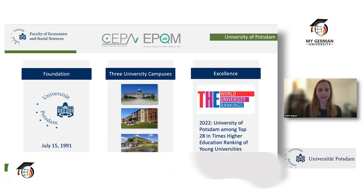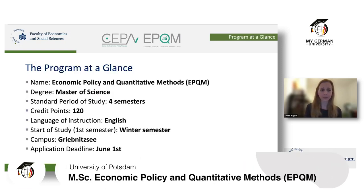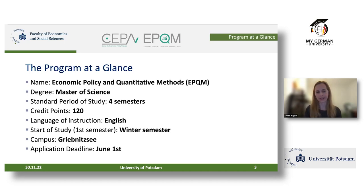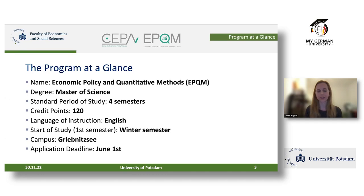The program is called Economic Policy and Quantitative Methods — EPQM — and these are the two focus areas you can specialize in. It is a Master of Science program with a standard duration of four semesters, requiring 120 credit points. All courses are taught completely in English. This semester's cohort has about 25 students, of whom around 15 are international. A new cohort starts every winter semester, with an application deadline of June 1st.